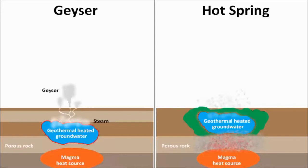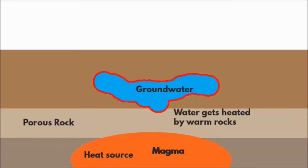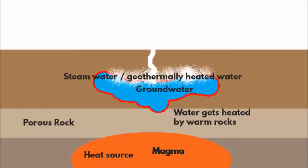Now the question is how does the water of a geyser become hot? When underground water comes in contact with rocks that are heated by magma, you have to keep in mind that the heat needed for geyser formation has to be close to the surface of the earth. This is also called geothermal heated water. The hot water then rises towards the surface by the process of convection.